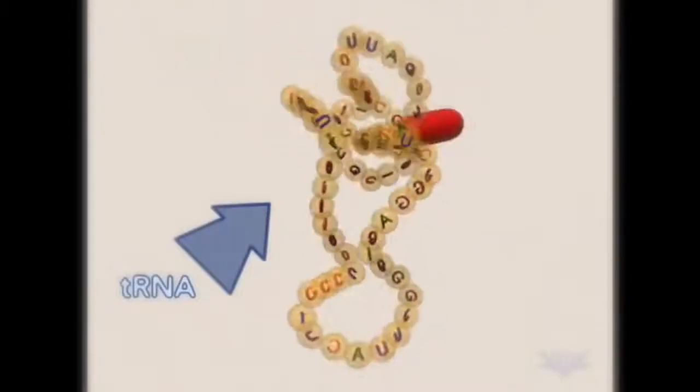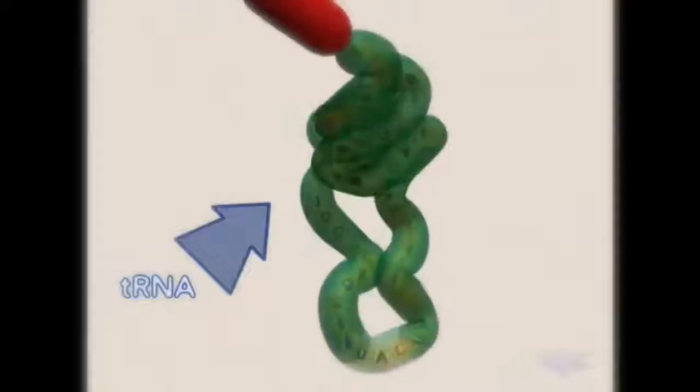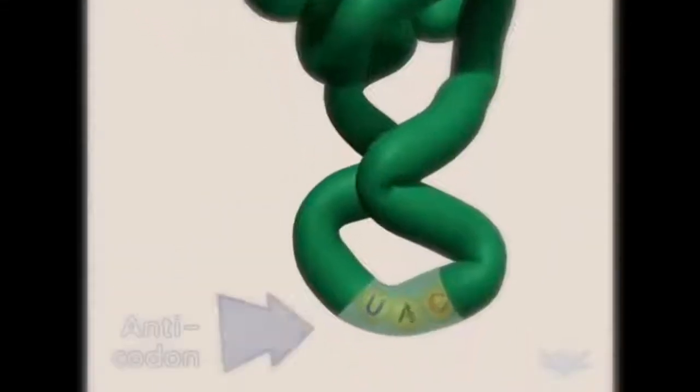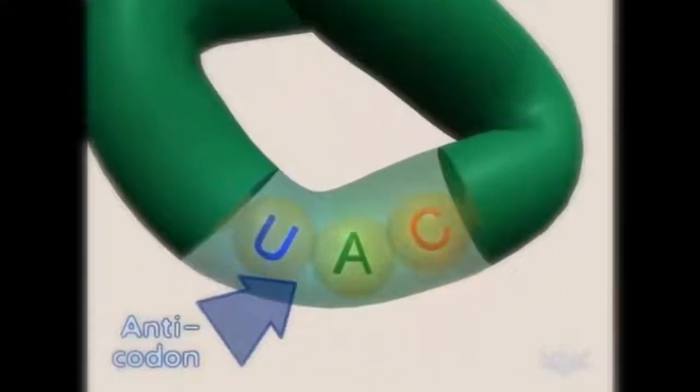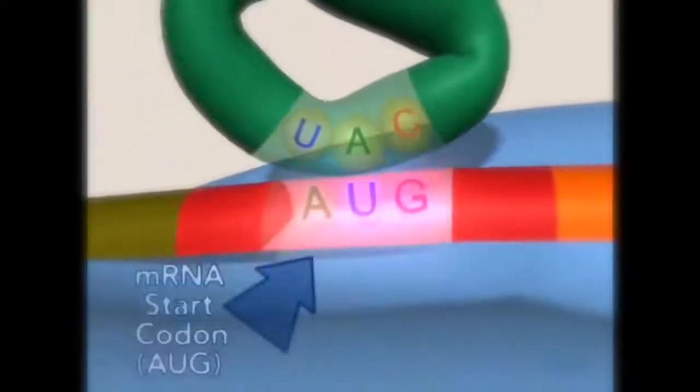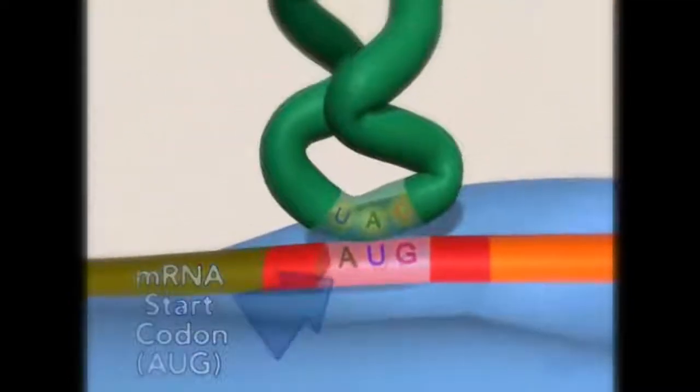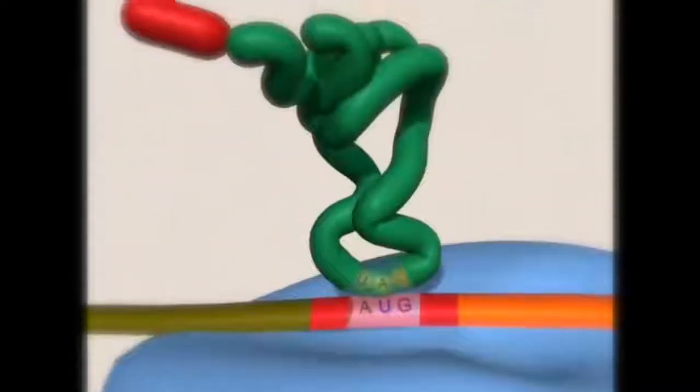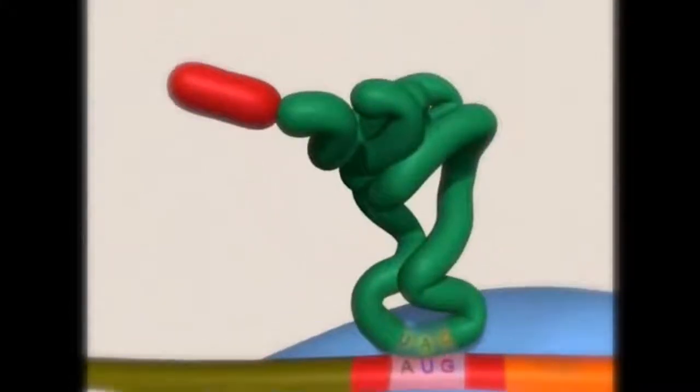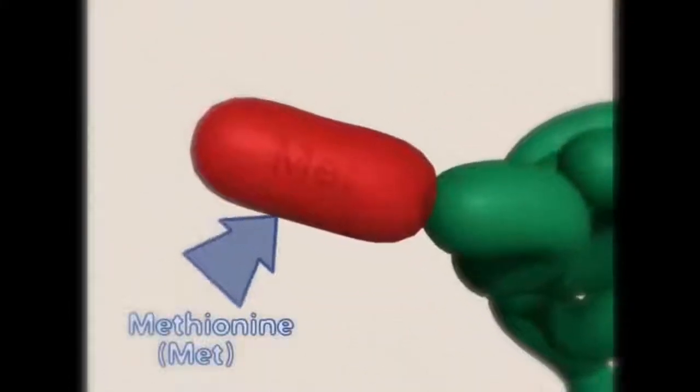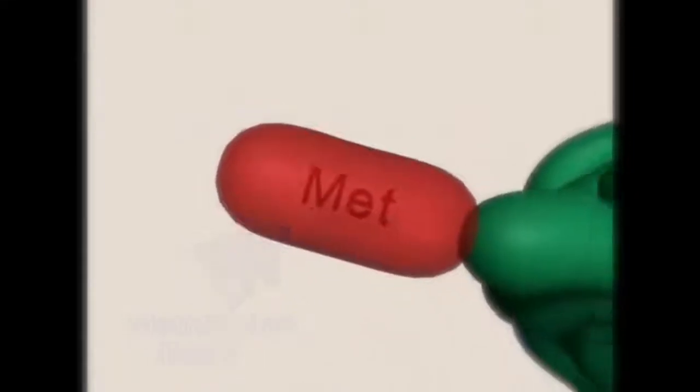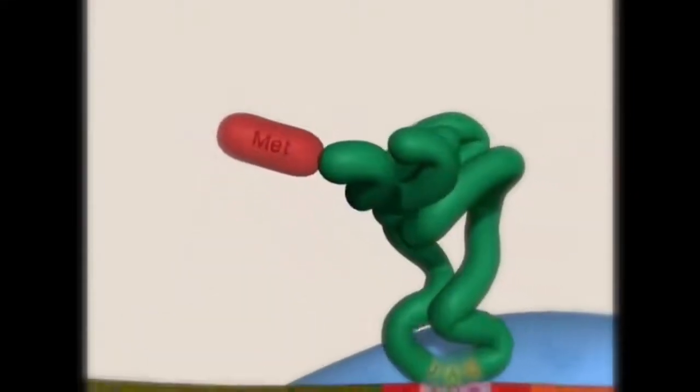tRNA is another key molecule. It contains an anticodon that is complementary to the mRNA codon to which it binds. The first mRNA codon is typically AUG. Attached to the end of the tRNA is the corresponding amino acid. Methionine corresponds to the AUG codon.